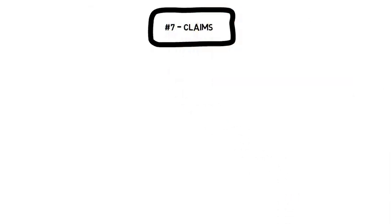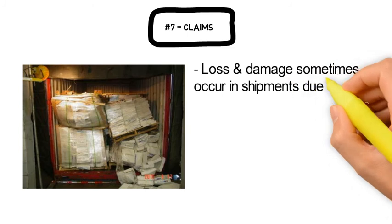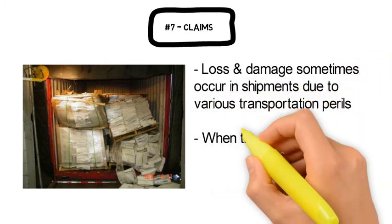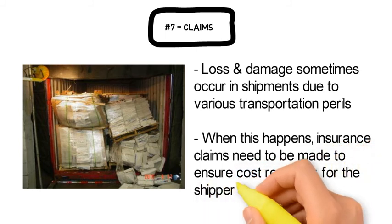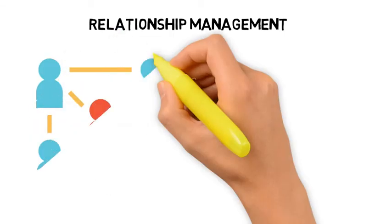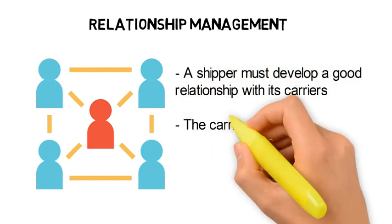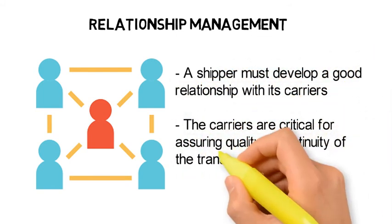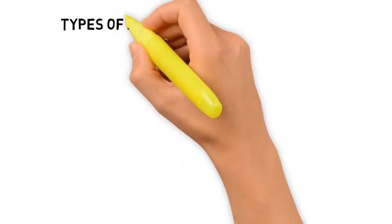Loss and damage sometimes occurs in shipments due to the various transportation periods. When this happens, the recipient of the cargo must first initiate a survey of the damaged cargo to assess the cost impact, then an insurance claim is submitted to the insurance company. The entire process to handle the claim and issue compensation is often a long one. A shipper must develop a good relationship with its carriers, since they are the means by which products can reach destination markets and are critical for assuring quality and continuity of transport service at the lowest total cost.